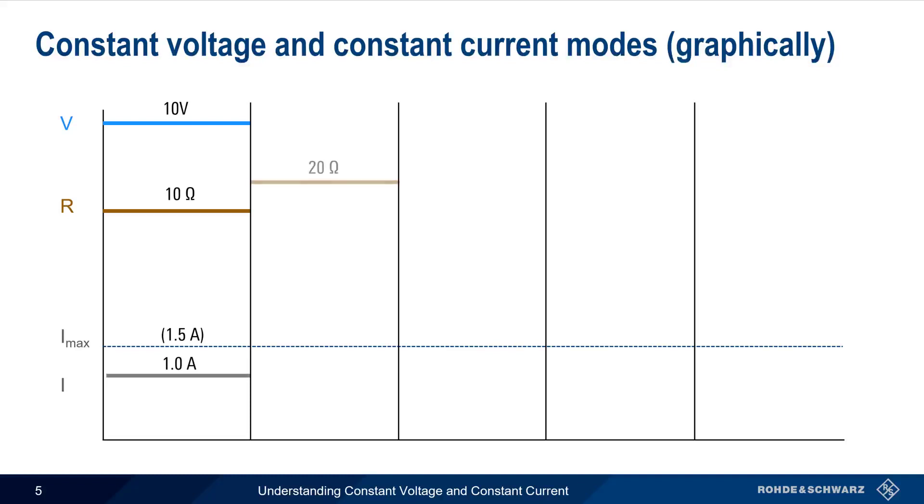If resistance is increased to 20 ohms, voltage remains constant at 10 volts, and the current decreases to 0.5 amps.